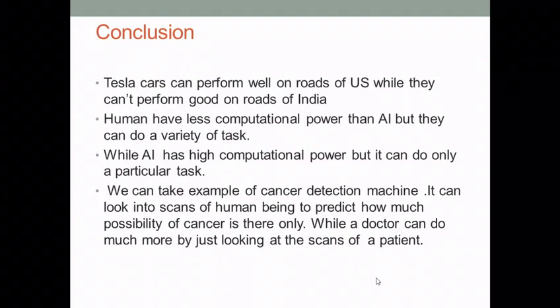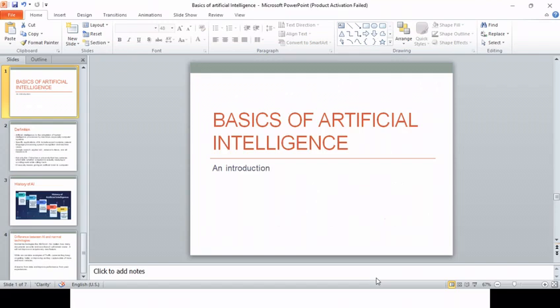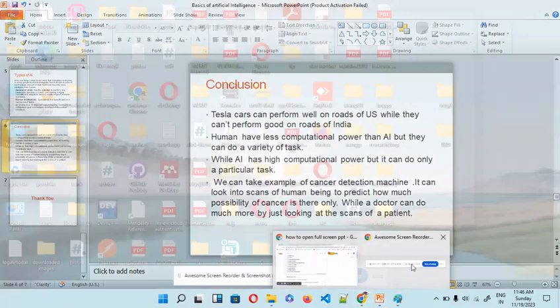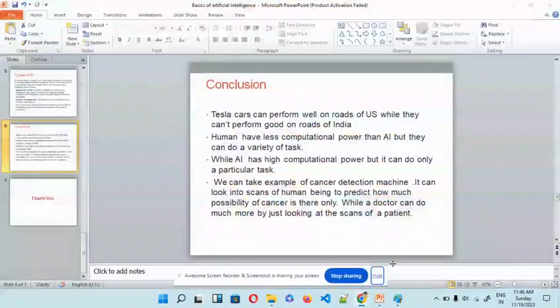Similarly, if a human being is taught to drive a car, they can drive on the roads of the US as well as on the roads of India. So we can say that humans have less computational power than AI but can do a variety of tasks, while AI has higher computational power but can do only a particular task. For example, a cancer detection machine looks at the scan of a human being to predict the possibility of cancer, but it can only predict that percentage — while a doctor looking at the same scan can do much more in that situation.